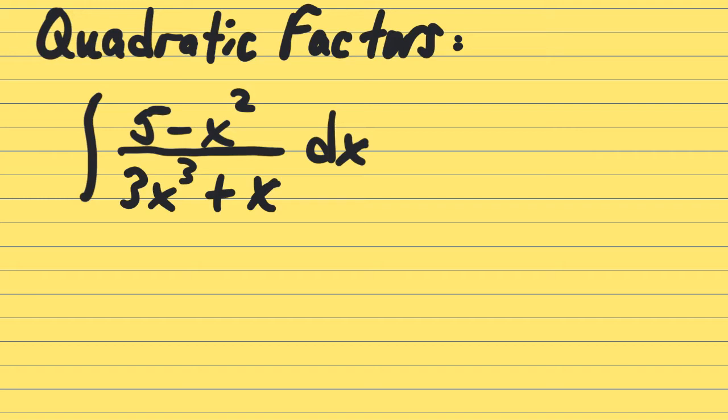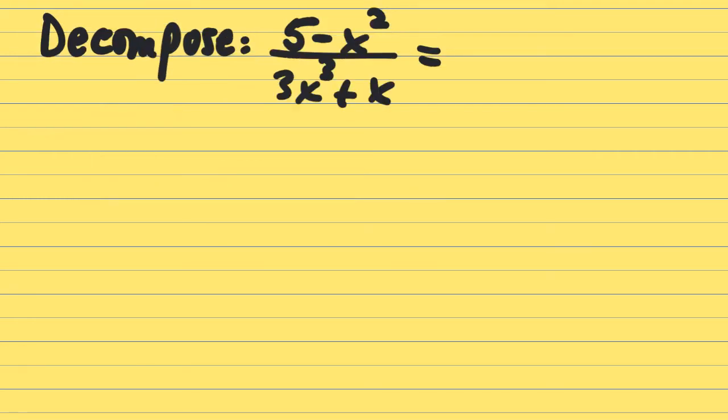Let's take that rational expression from the problem and decompose it. The first video in the sequence had a denominator that factored into two distinct linear factors, x minus 3 and x minus 2 specifically. For this one, if you factor the denominator, you can factor out an x, but it's going to leave a 3x squared plus 1 as the other factor.